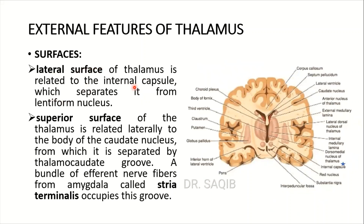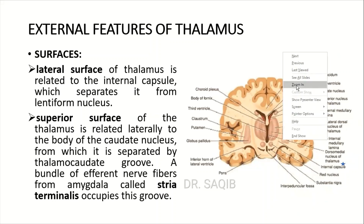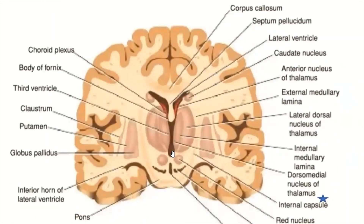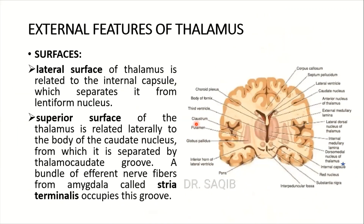The lateral surface of the thalamus is related to the internal capsule, which separates it from the lentiform nucleus. The superior surface of the thalamus is related laterally to the body of the caudate nucleus, from which it is separated by a thalamocaudate groove. This is the thalamus and this is the caudate nucleus, and here lies the thalamocaudate groove.